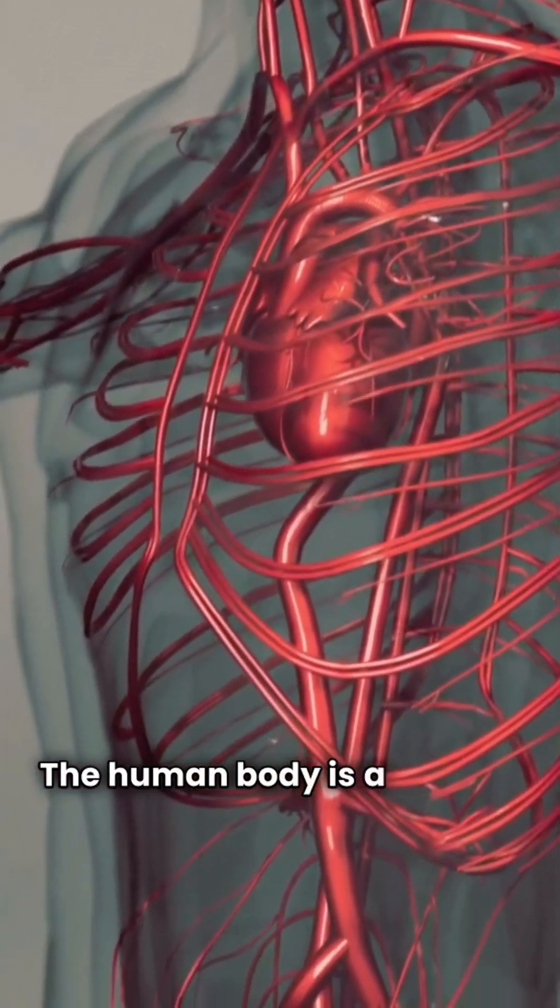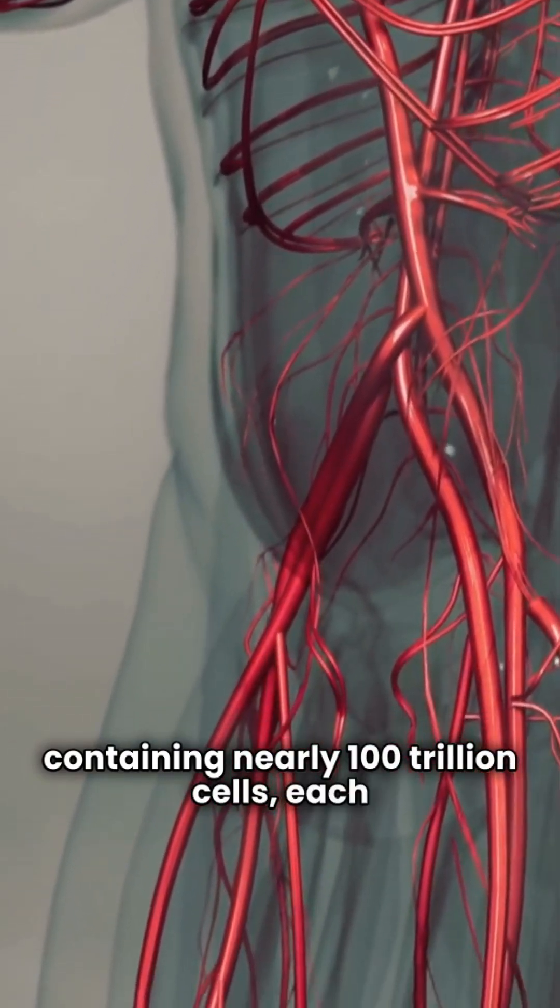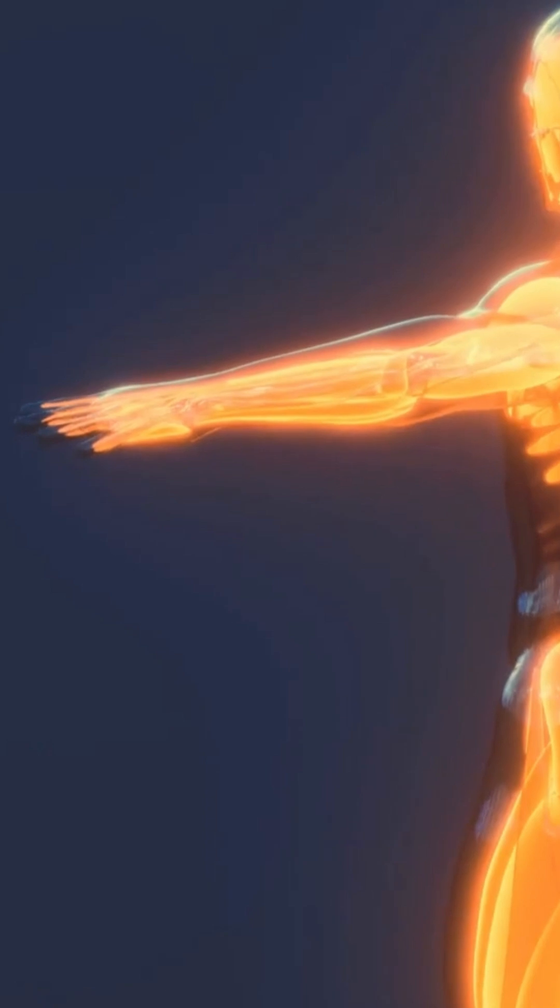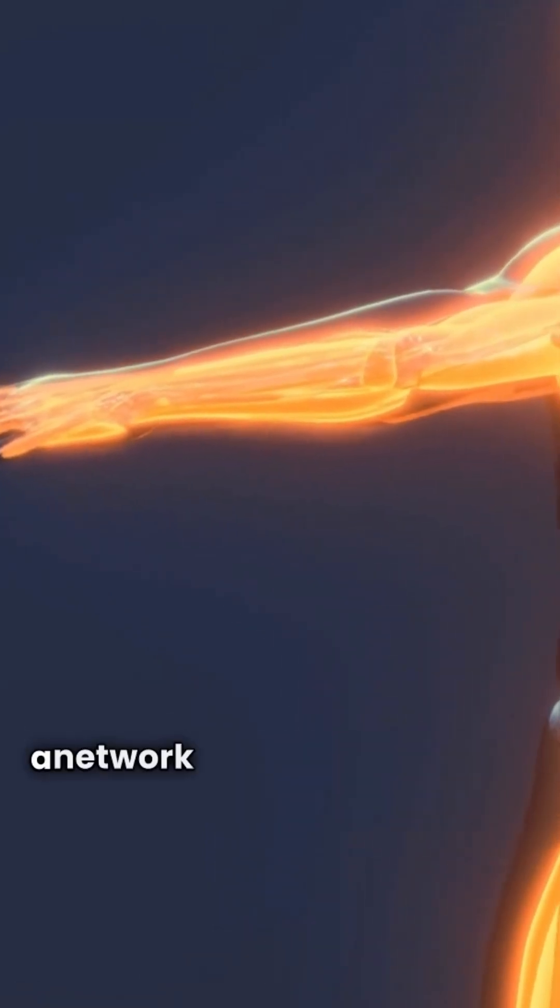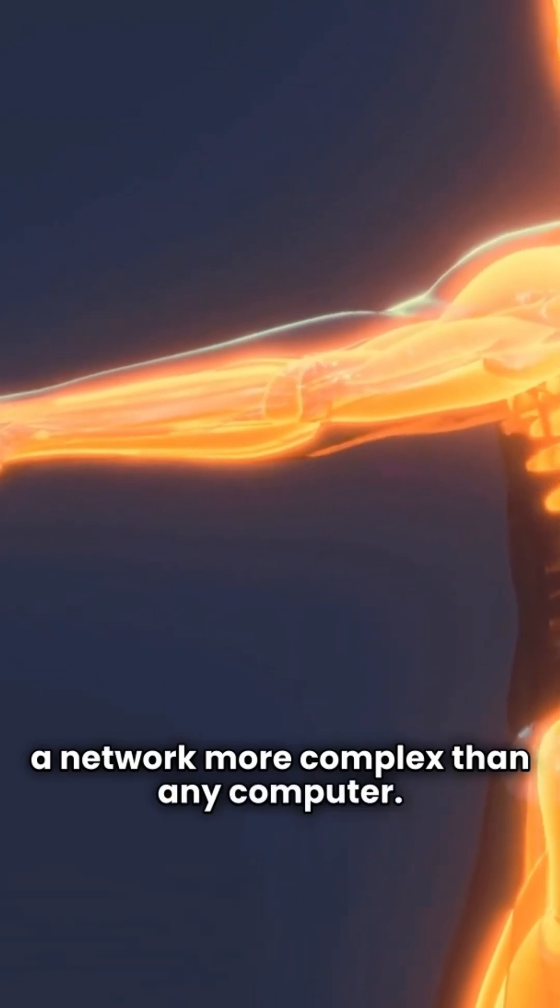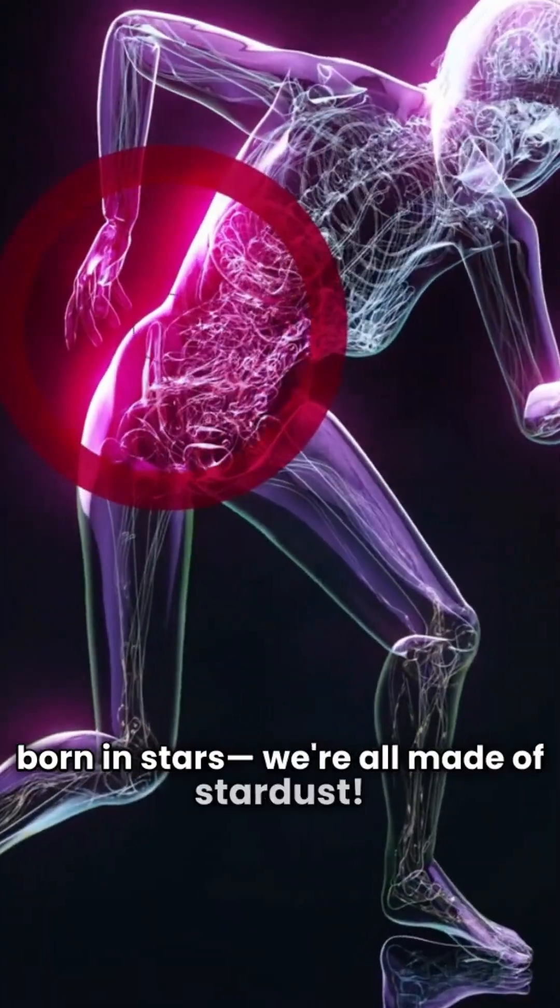The human body is a marvel, containing nearly 100 trillion cells, each doing millions of reactions every second. Our brains have about 100 billion neurons, creating a network more complex than any computer. Most of the atoms in our bodies were born in stars. We're all made of stardust.